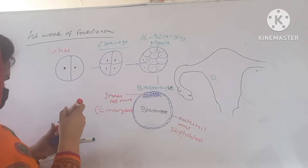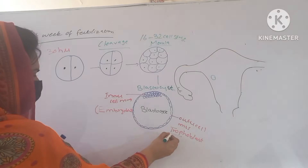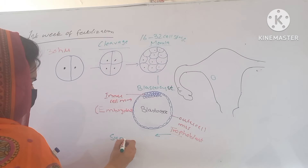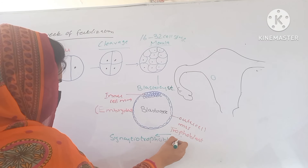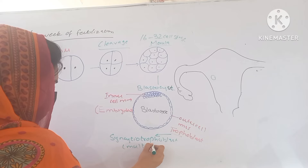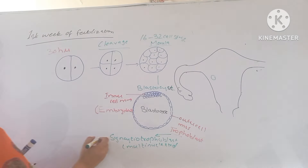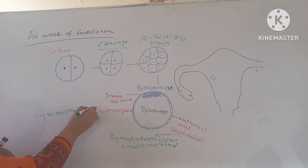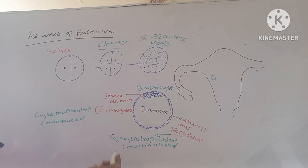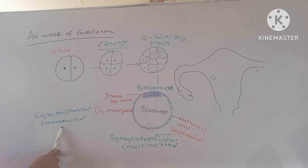The trophoblast is later divided into two layers. There is an outer layer known as the syncytiotrophoblast, which is the multi-nucleated layer. The second layer is the cytotrophoblast, which is the mononucleated layer of almost cuboidal cells. So the trophoblast is divided into syncytiotrophoblast and cytotrophoblast.